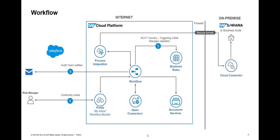The next step uses Business Rules. Our fake company does not want to work with NCCT — Non-Cooperative Countries or Territories. So if the account the sales rep is trying to create has a bank account in an NCCT country, this will trigger a risk manager validation via Business Rules. Business Rules is a great way to give end users the power to create and deploy their own rules outside of the technical workflow.